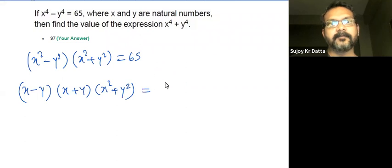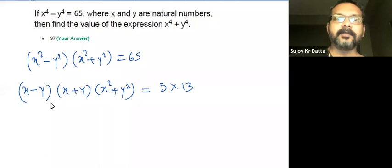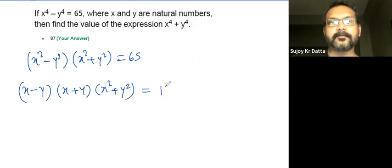This equals 65, which is 5 times 13. Since 5 and 13 are the bigger factors, x minus y must be the smallest of them, so we have 1, 5, and 13.